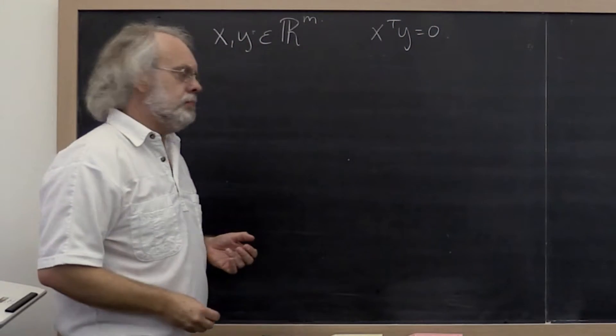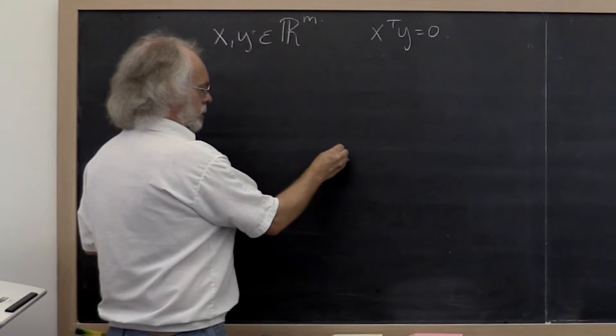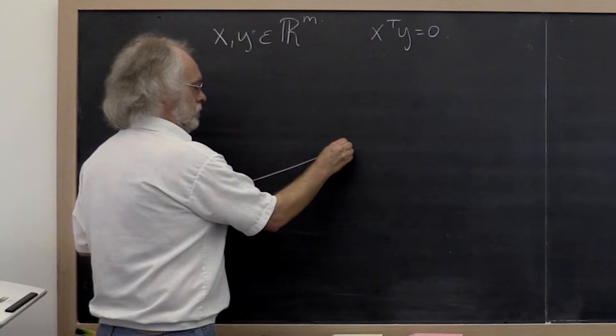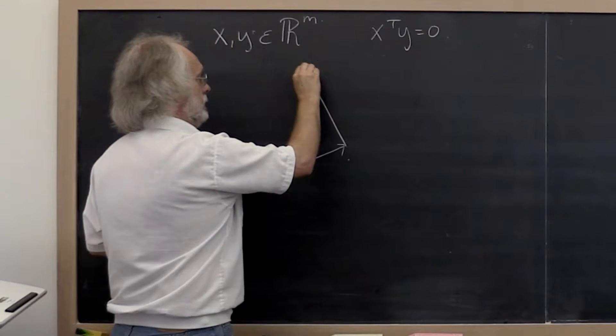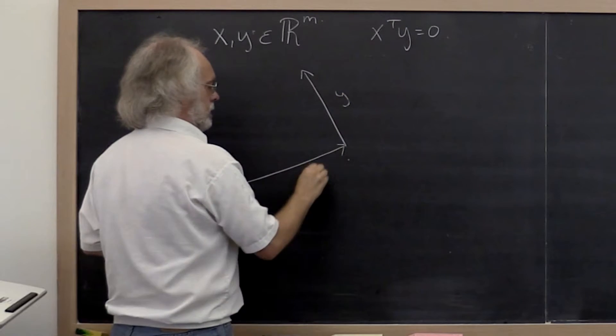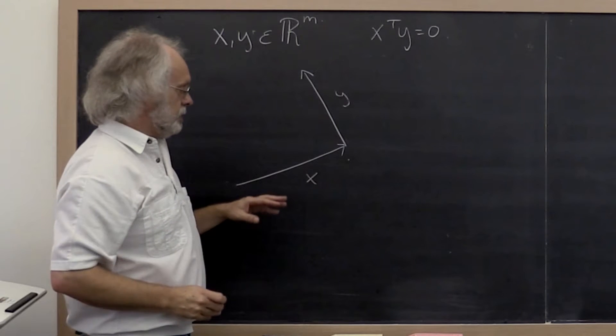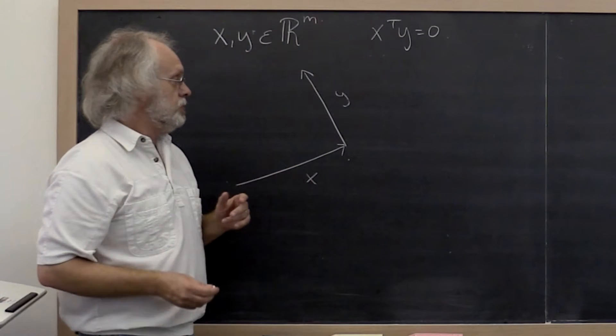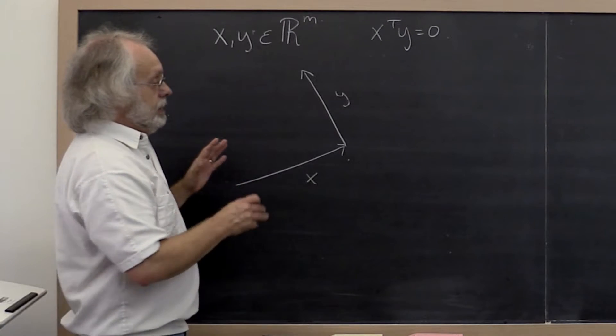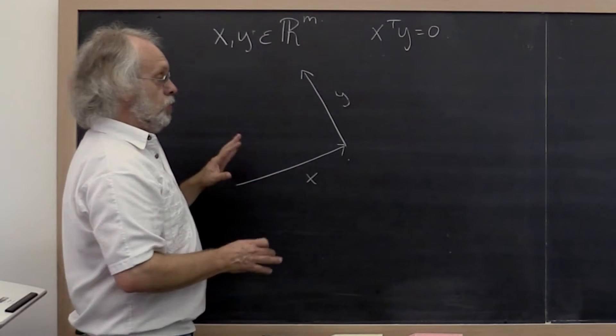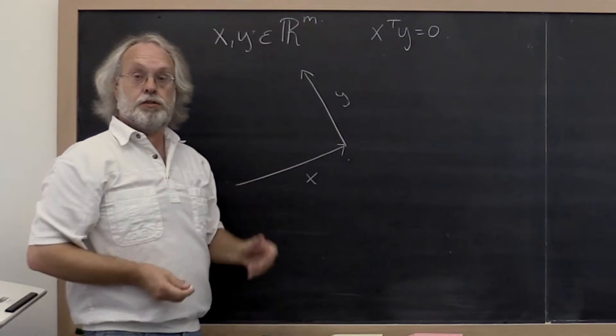Where does that come from? Let's have a look here. We have a vector x and a vector y. Then notice that the space spanned by those two vectors, as long as they're non-zero vectors and they don't point in the same direction, is a two-dimensional space. So we can think of the chalkboard as being that two-dimensional space.